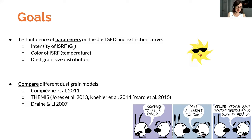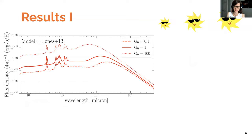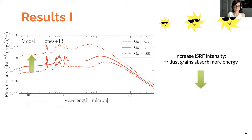I'm going to focus on two things. The first shows what happens when you increase the intensity of the interstellar radiation field. Basically, this means you have more photons, so the dust grains can absorb more energy, and as a consequence they will also emit more energy. So the spectral energy distribution of the dust grains will shift upwards.